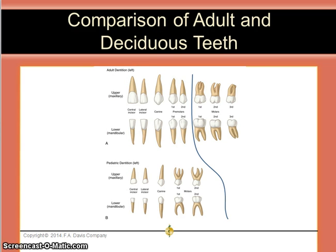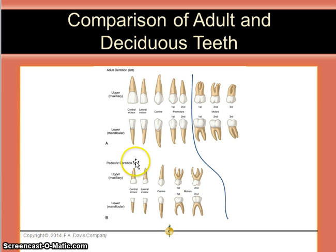Comparing adult to deciduous teeth: there are 20 total deciduous teeth versus 32 permanent teeth. Children have 10 deciduous teeth on each arch, and each dental arch is divided into two parts creating four quadrants. Baby molars become permanent premolars, and adult molars develop independently from the deciduous teeth. Each quadrant of a child's arch contains two incisors, one canine, and two baby molars. Each quadrant of an adult's arch contains two incisors, one canine, two premolars, and three permanent molars.